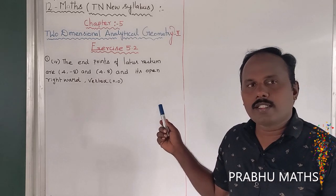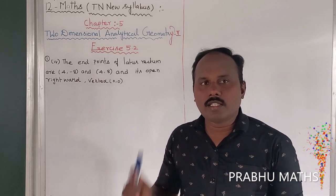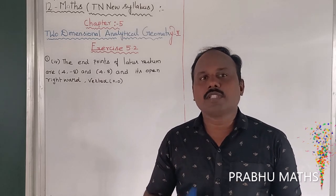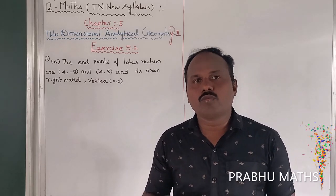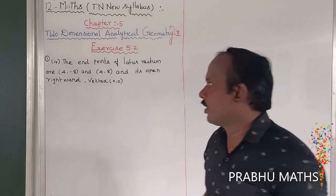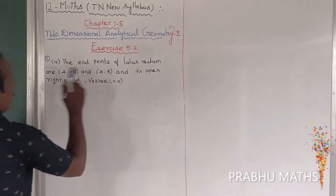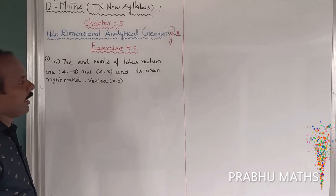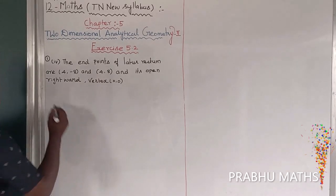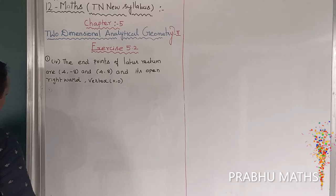To find the value of 4a, we use the fact that 4a equals the distance between the endpoints of the latus rectum. So first we need to find that distance.